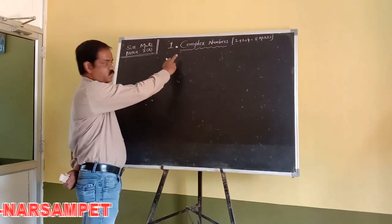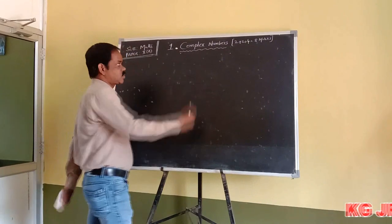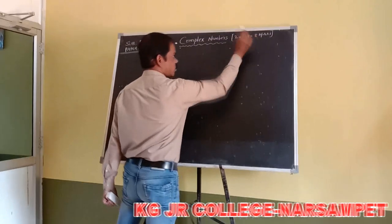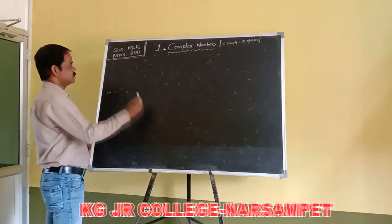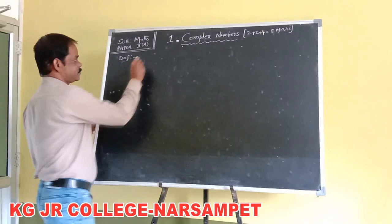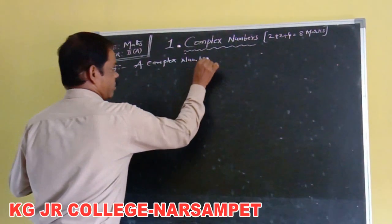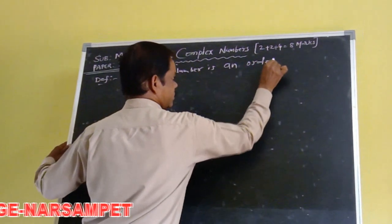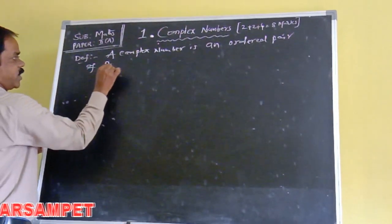Today we will be discussing the first chapter in Mathematics Paper 2A: Complex Numbers. There are various numbers in IPE — 2 plus 2 plus 4, totaling 8 numbers. Today we will be discussing Complex Numbers. The definition of a complex number is: a complex number is an ordered pair of real numbers.